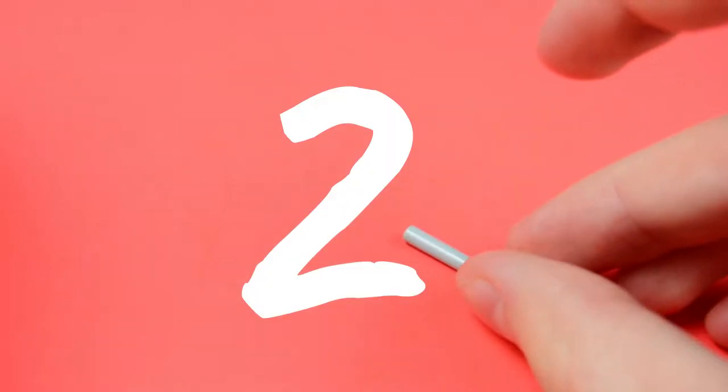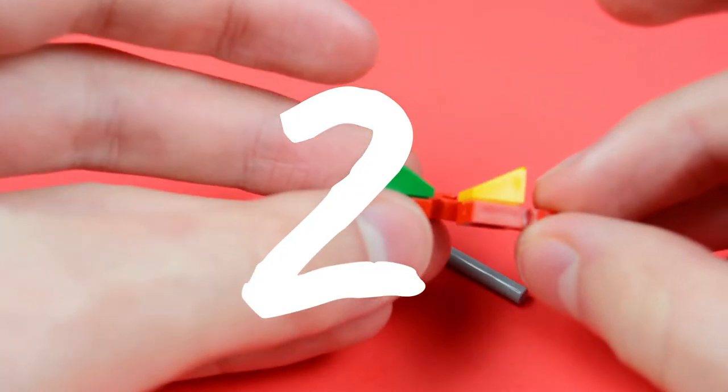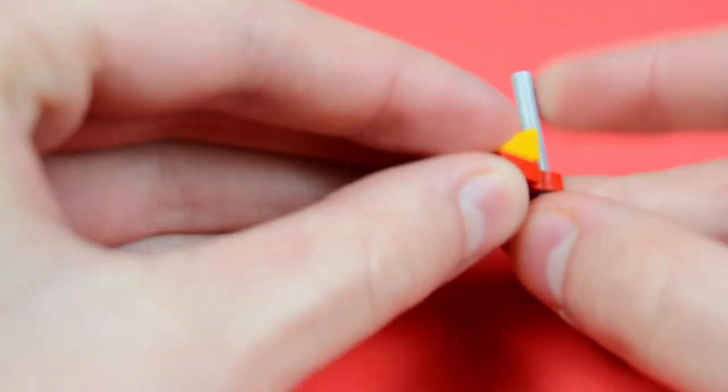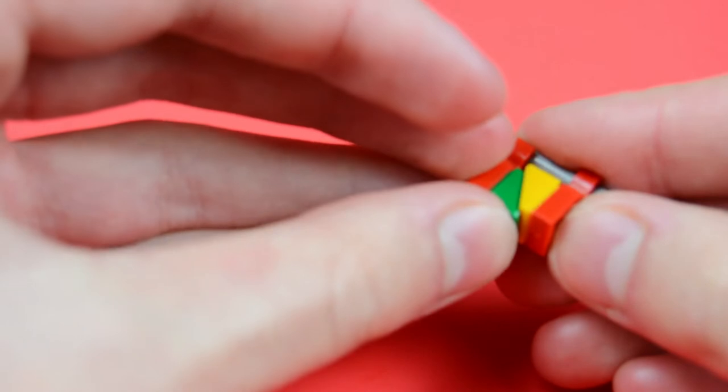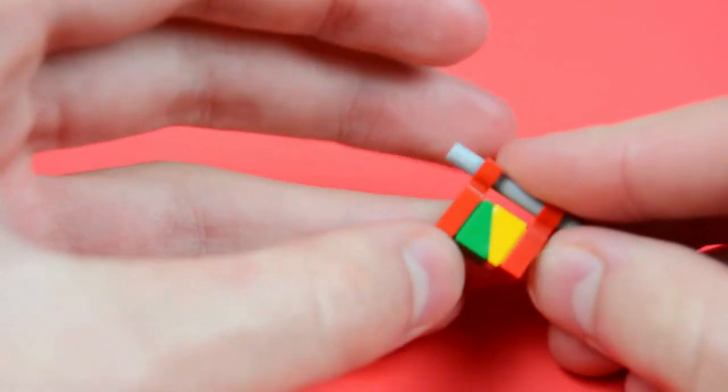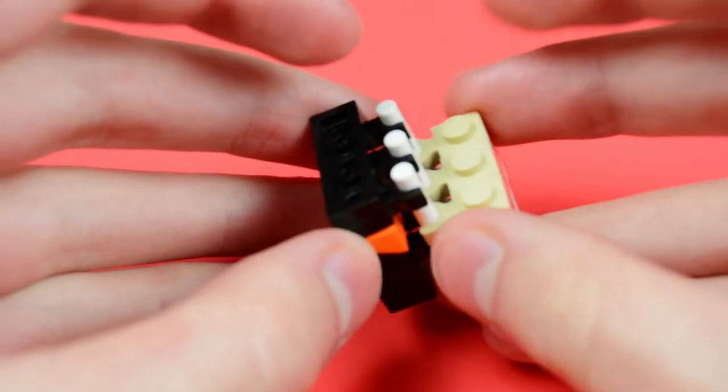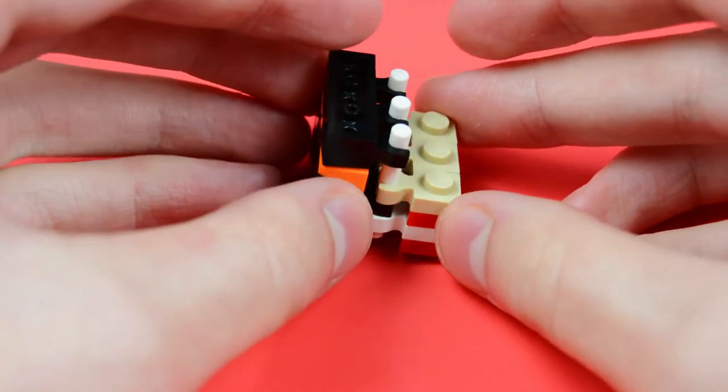Technique number two starts off pretty simple, but gets complicated fast. I've broken it down into three smaller steps so it's easier for you to understand. Step number one is the easy step. Essentially, it's just a cheese slope with another one upside down on top of it. In this example, I use clips and a bar to make it connect, but you don't have to.